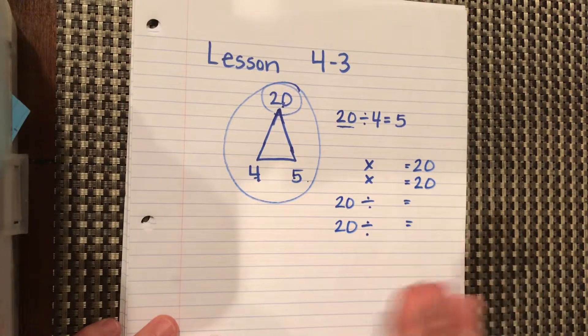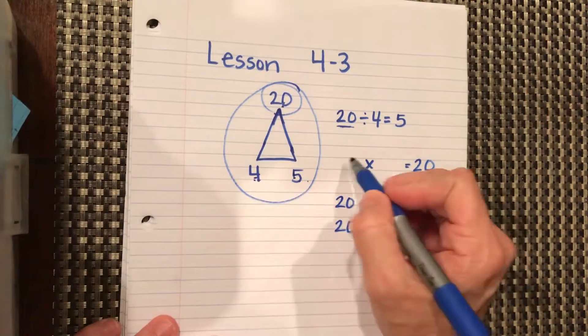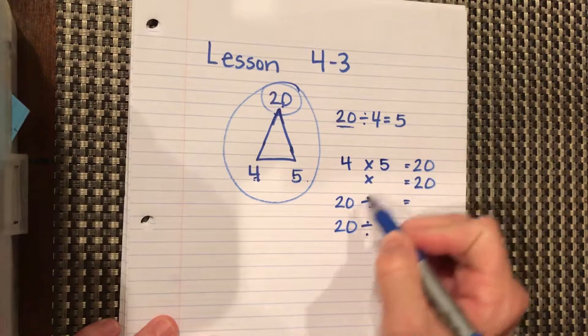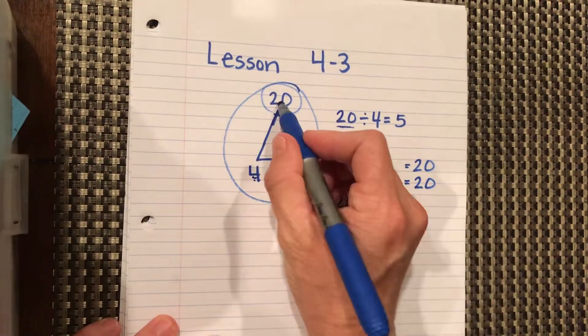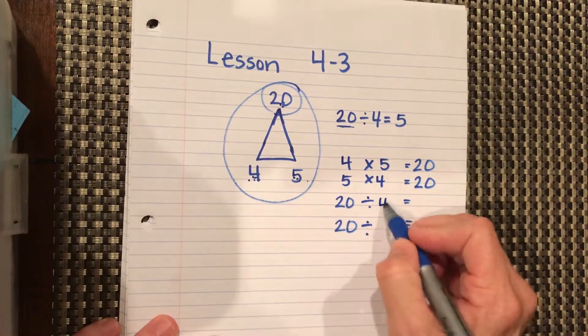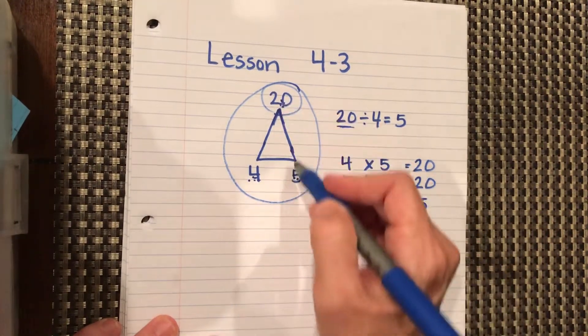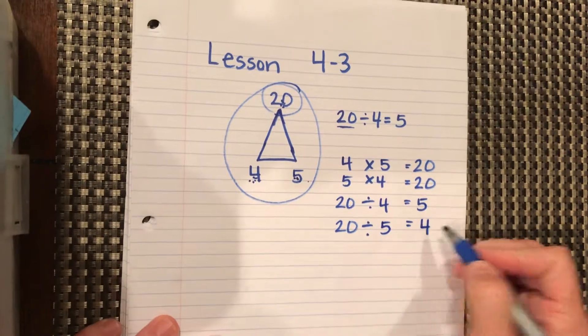It has to get set up like that every time. Then we can do 4 times 5 equals 20, 5 times 4 equals 20, 20 divided by 4 equals 5, and 20 divided by 5 equals 4.